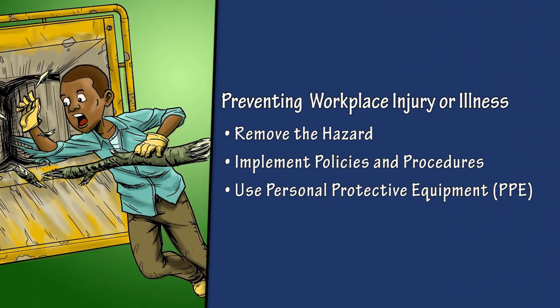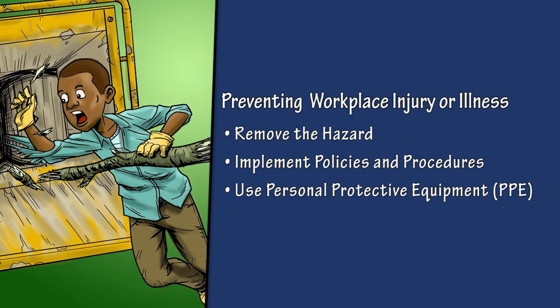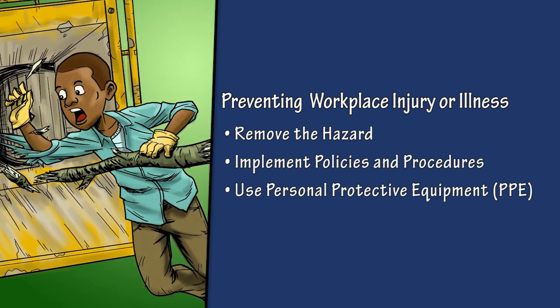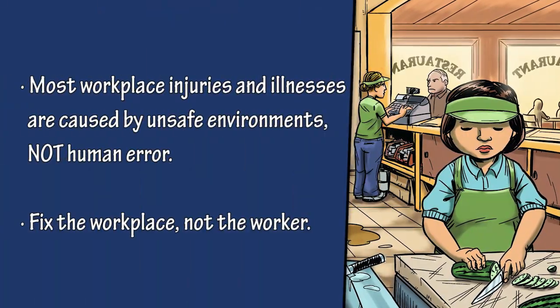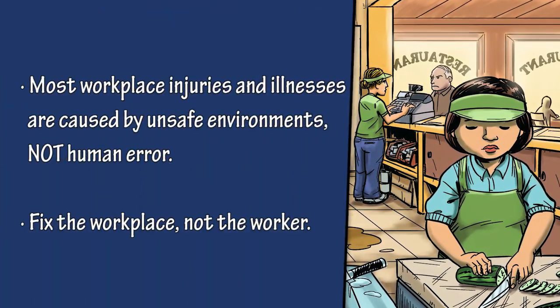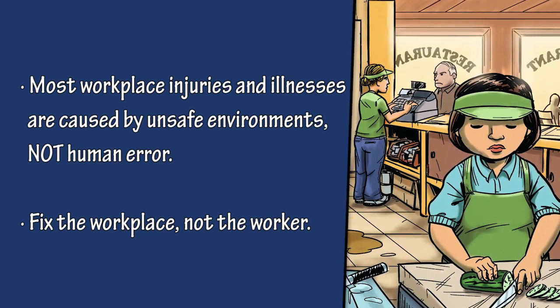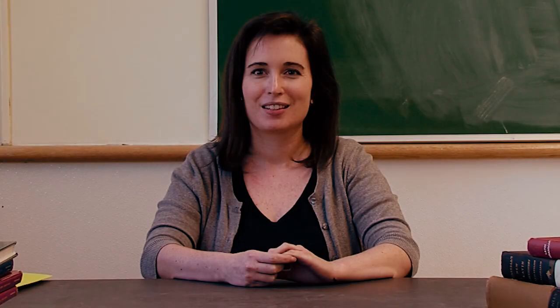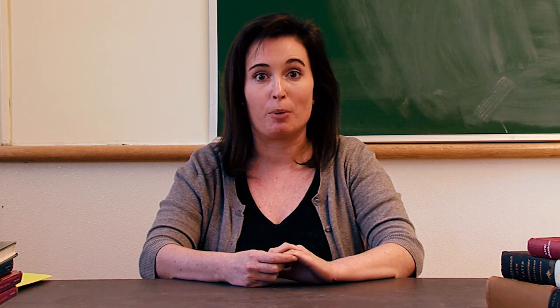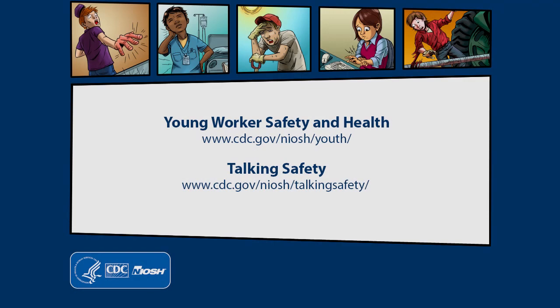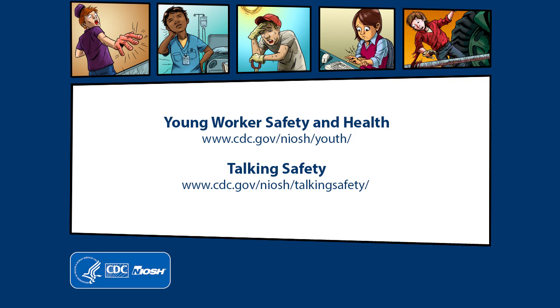The best way to prevent a workplace injury or illness is to remove the hazard. If this can't be done, then hazards can be controlled through work policies and procedures, or the use of PPE — personal protective equipment — such as a respirator or hearing or eye protection. Most workplace injuries and illnesses are caused by unsafe environments, not human error. A good way to think about addressing hazards in the workplace is: fix the workplace, not the worker. This concludes Lesson 3 of 6 in the Talking Safety training video series. In this lesson, we helped students understand the three main ways to reduce or eliminate hazards at work, and explained which methods are most effective for controlling hazards. We hope you found this training informative. You can get more information on young worker safety and health topics from any of these resources.